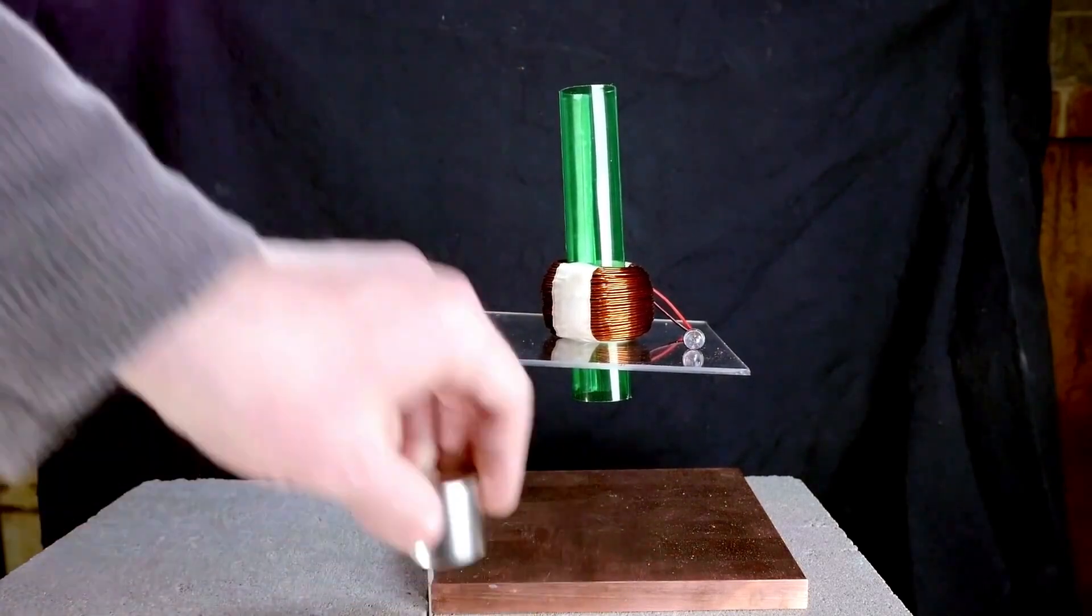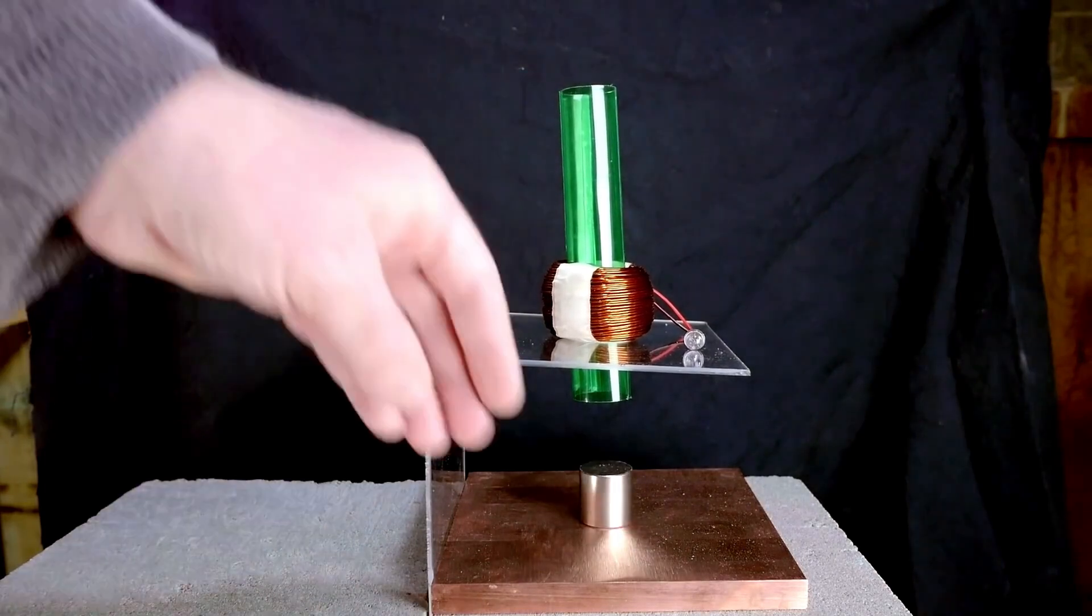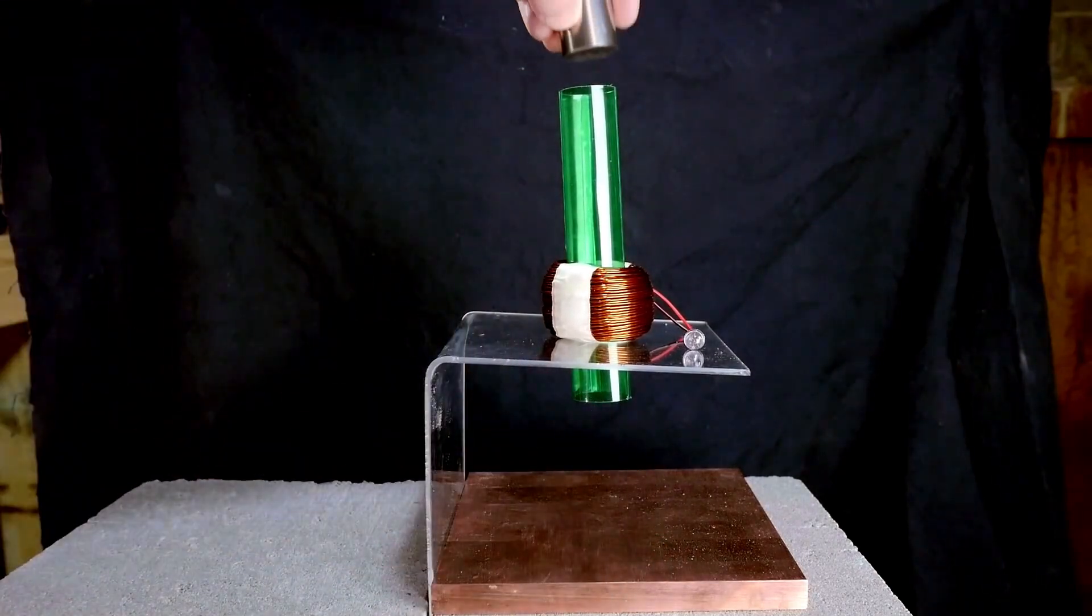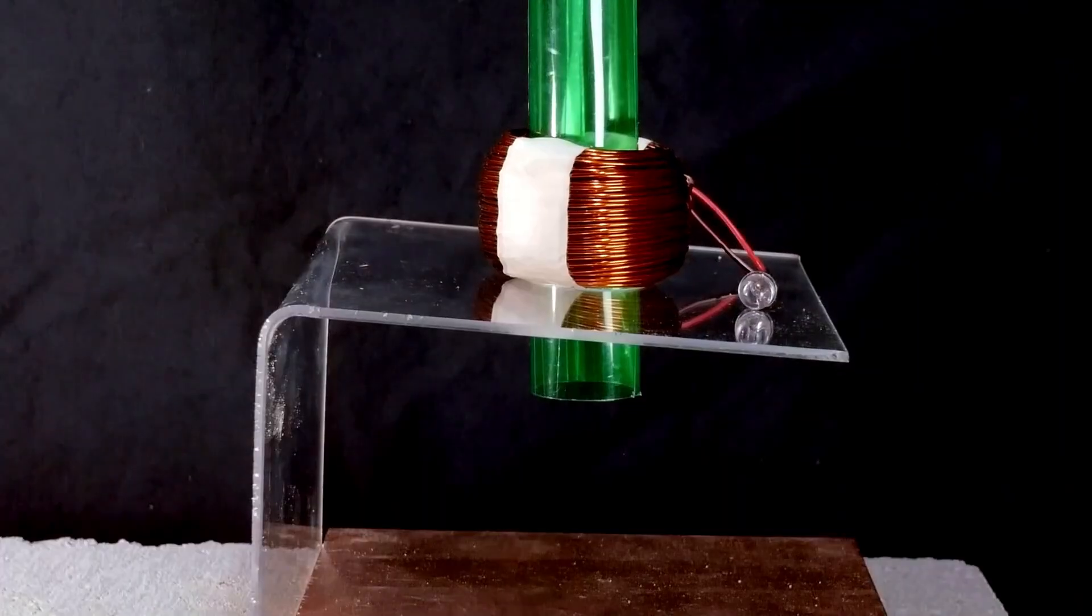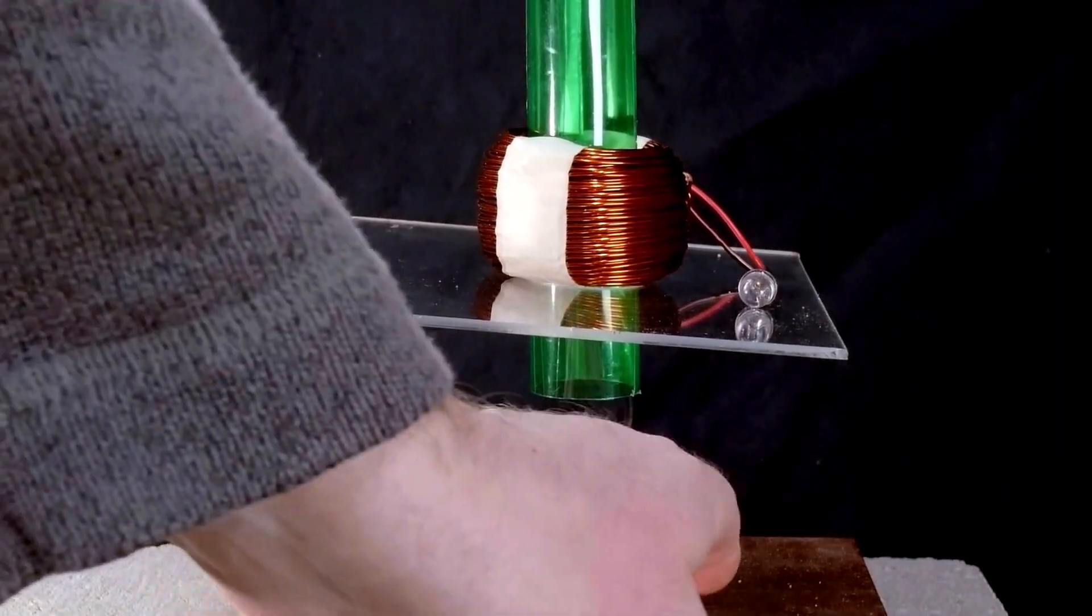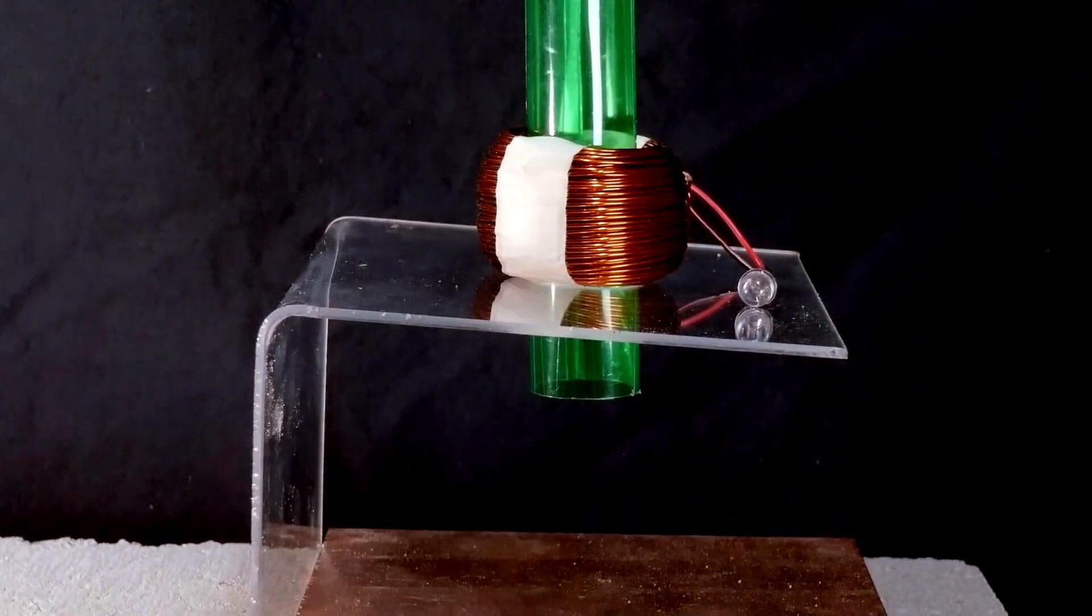This is a simplified model of how the majority of the world's electricity is generated. There are many different types of power plants, but most of them are just trying to figure out different ways to more efficiently move magnets through coils of wire.